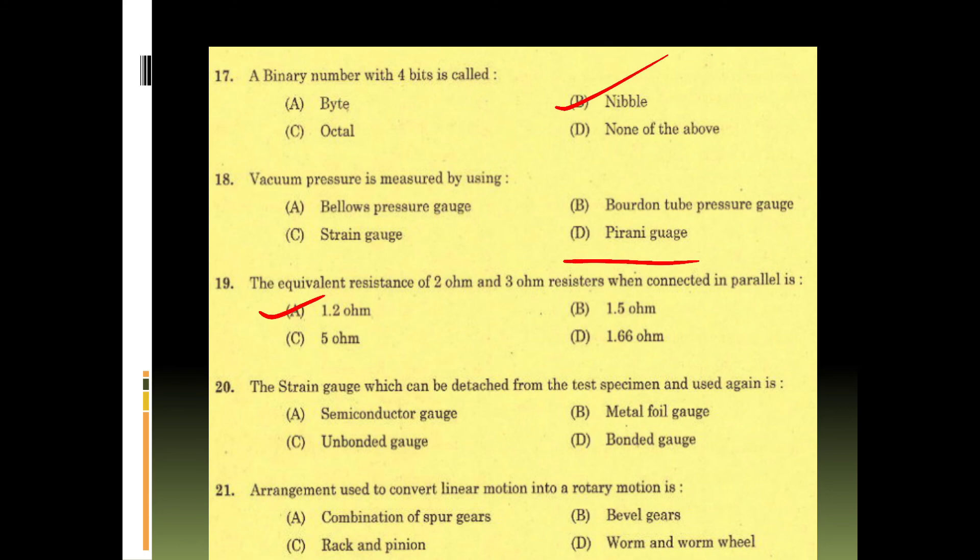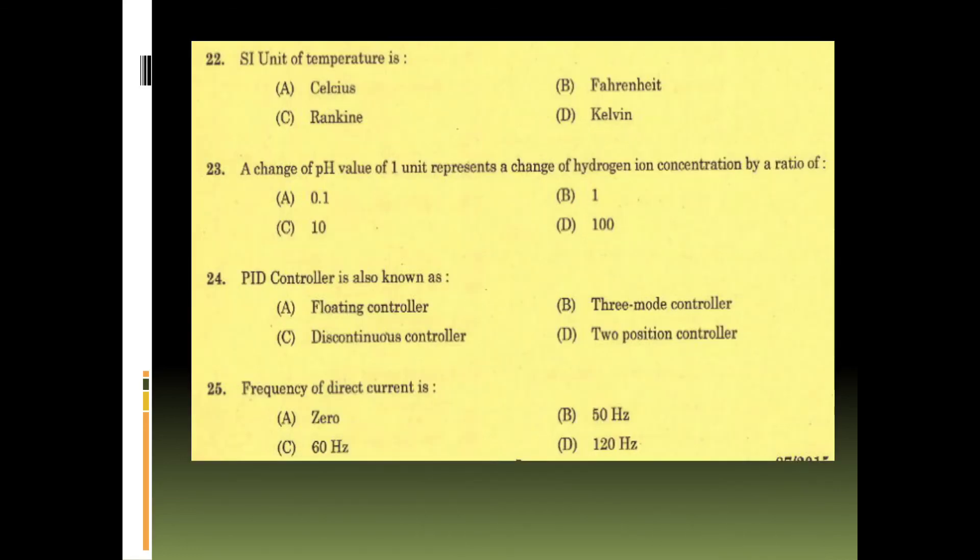Twentieth question: strain gauge which can be detached from the test specimen and used again is - semiconductor gauge, metal foil gauge, unbonded gauge, bonded gauge. Option C, unbonded gauge. Twenty-first question: arrangement used to convert linear motion into rotary motion - this is rack and pinion. Twenty-second question: SI unit of temperature is Kelvin.